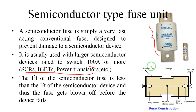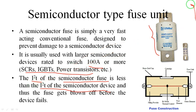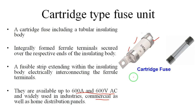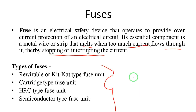The semiconductor fuse is a very fast-acting conventional fuse designed to prevent damage to semiconductor devices. This fuse has a lower I²t value compared to the semiconductor device's I²t value. When high current flows toward the semiconductor device, the semiconductor fuse — connected before the device — melts first because of its lower I²t value. The fuse blows before the device fails, thereby protecting the semiconductor device. This concludes the discussion on the four types of fuses.